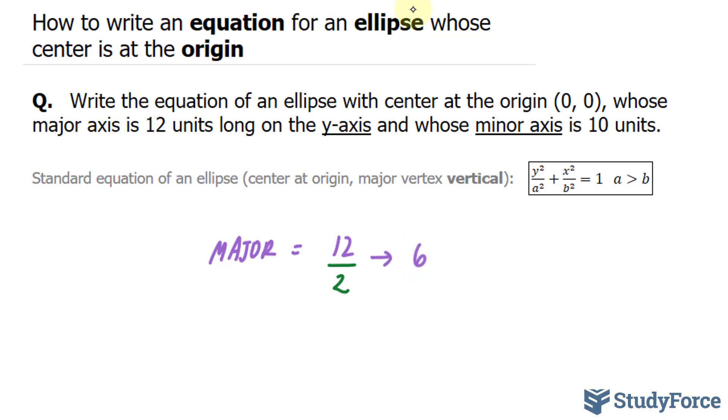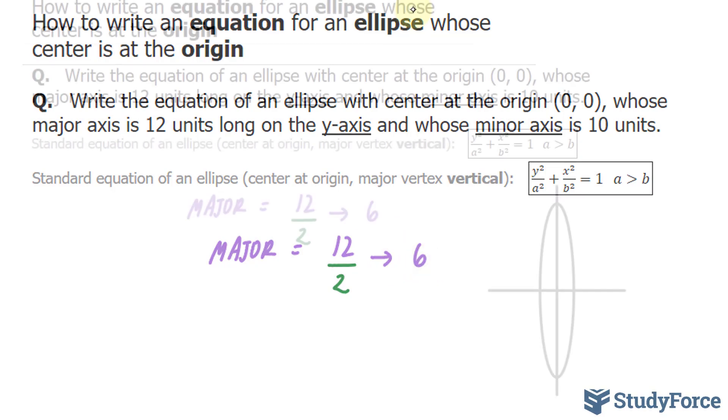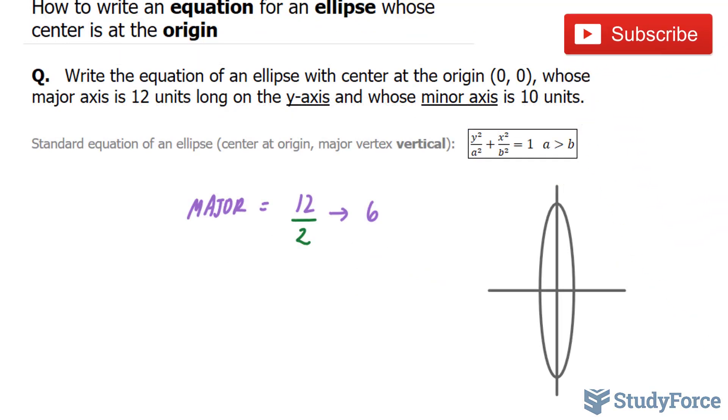Now just to give you an understanding of what we just found, I'll draw an ellipse for you. So I've gone ahead and drawn an ellipse where it is stretched vertically. And what we just found—a represents the distance from here to here. That's your a. 12 represented the distance from here all the way to here.